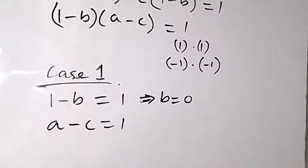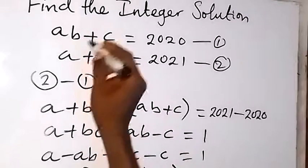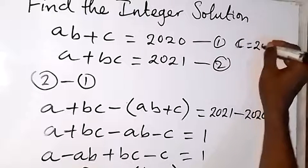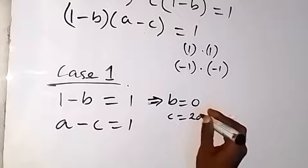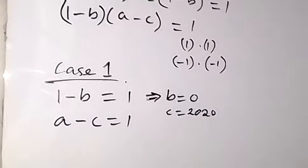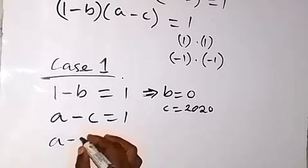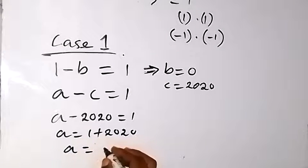Since B equals to 0, we can substitute that into equation 1. From equation 1 we have AB plus C equals to 2020. If we put B equals to 0, then 0 times A is 0, so everything with B becomes 0. That means C from equation 1 equals to 2020. And since C is 2020, we put it into A minus C equals to 1: so A minus 2020 equals to 1, which means A equals to 1 plus 2020, therefore A equals to 2021.